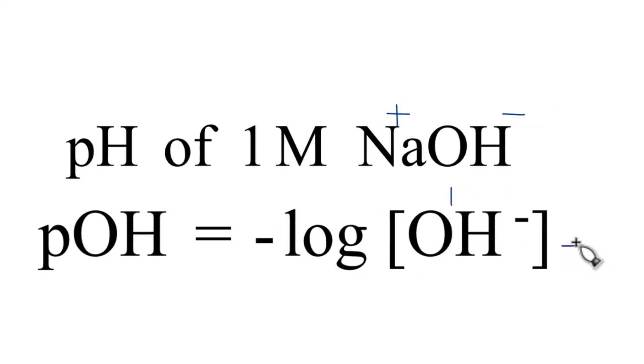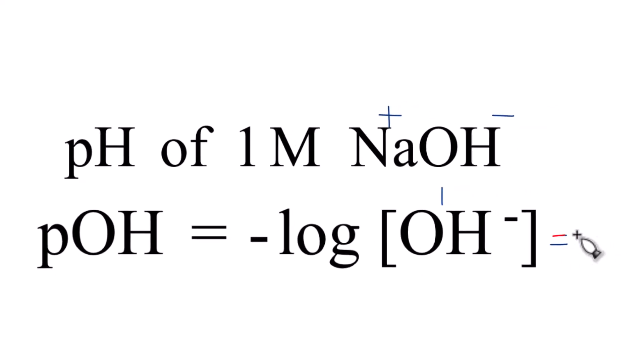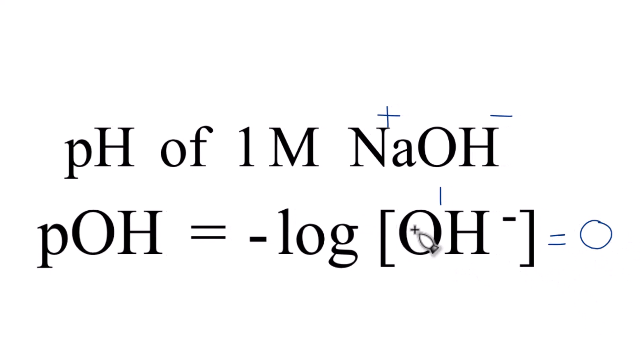Negative 0 is still just 0. So we end up with a pOH of 0 when we have a 1 molar solution of sodium hydroxide.